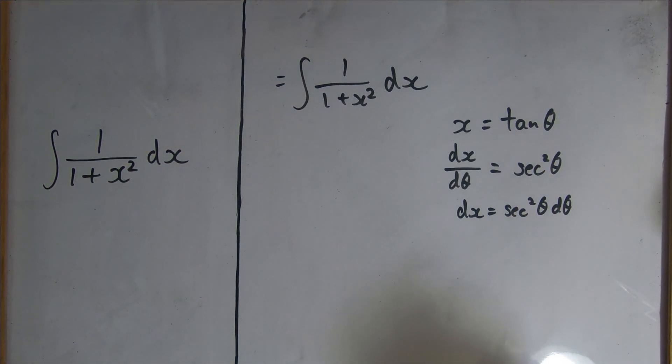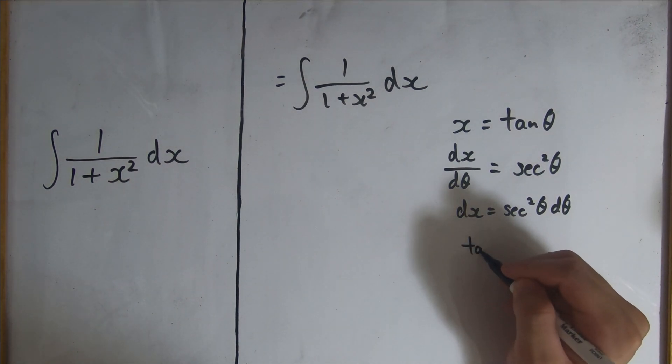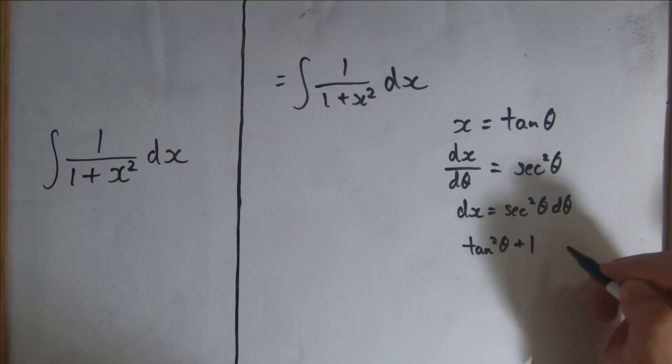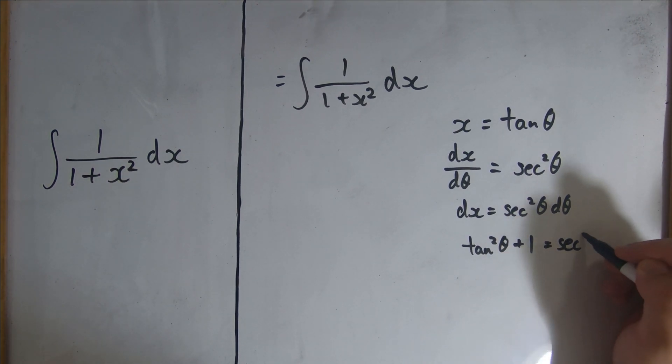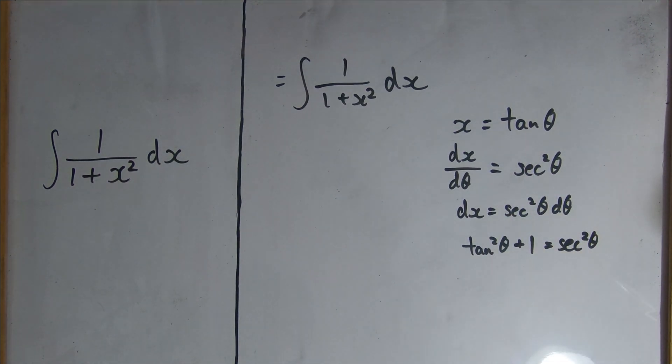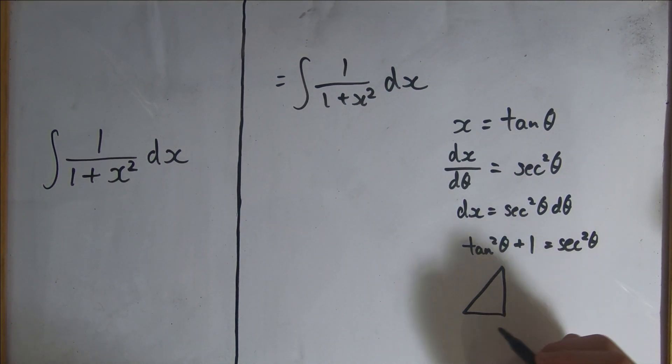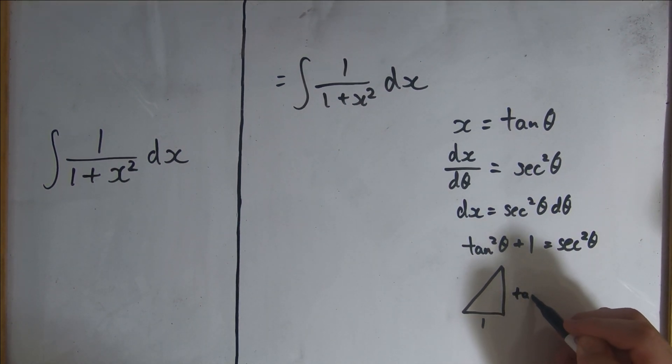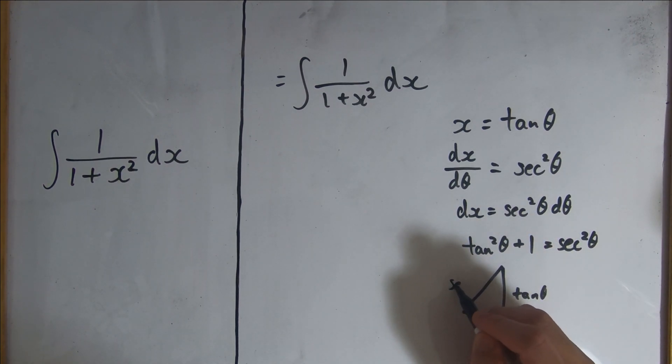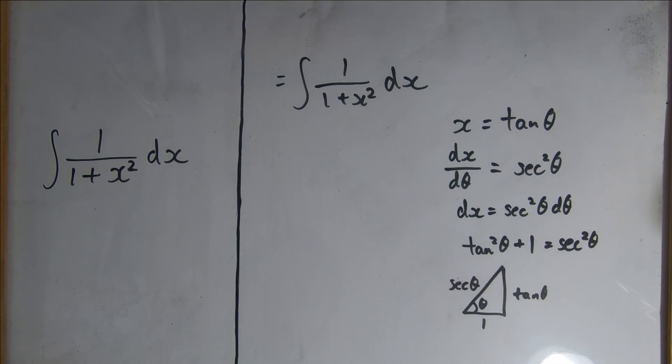One more thing to note is that tan squared theta plus 1 equals secant squared theta. To show this is true, let me draw a right angle triangle with lengths 1, tan theta, and secant theta. From the Pythagorean theorem, we have that 1 plus tan squared theta equals secant squared theta.